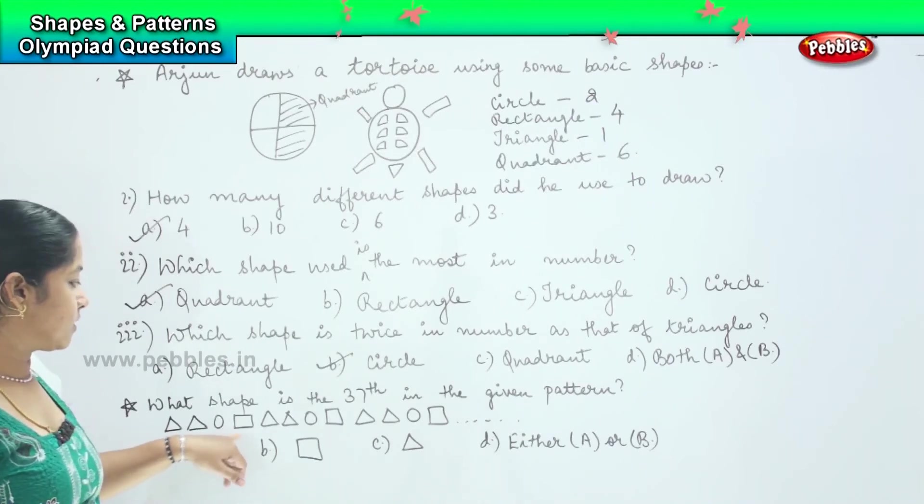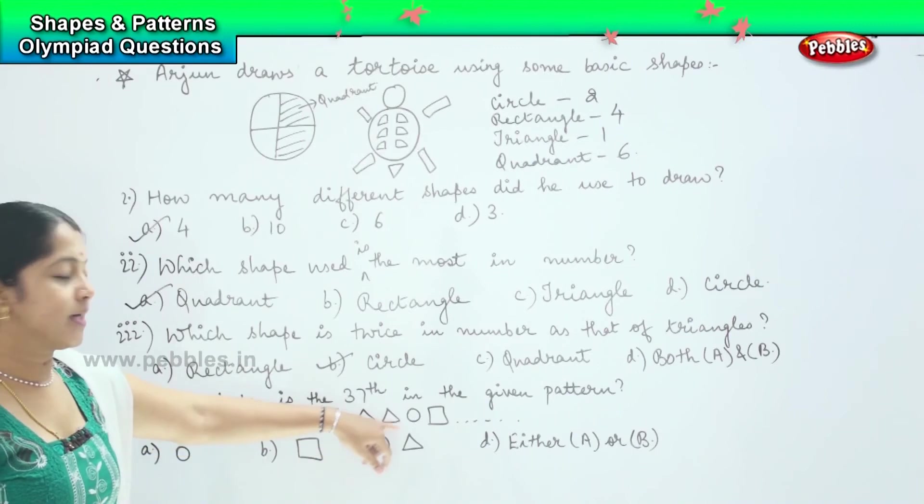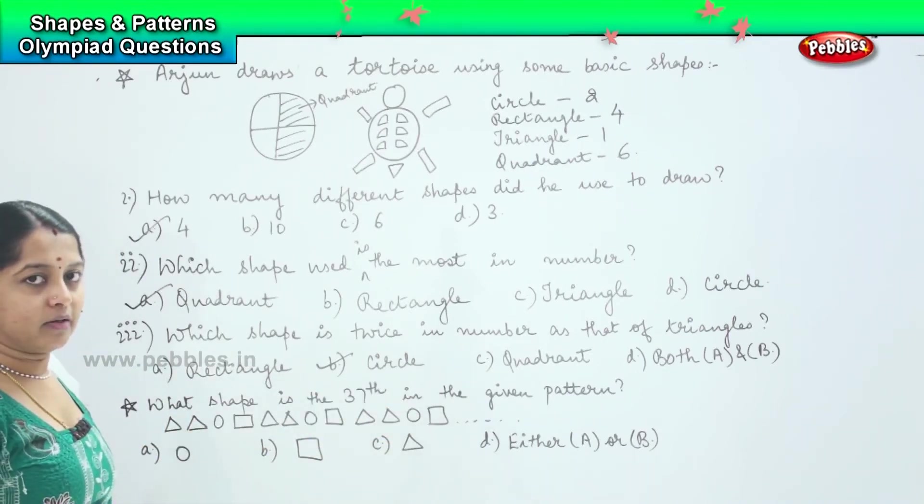Triangle, triangle, circle, square. Again triangle, triangle, circle, square. Triangle, triangle, circle, square, and it continues. So it is a repetitive pattern, right?